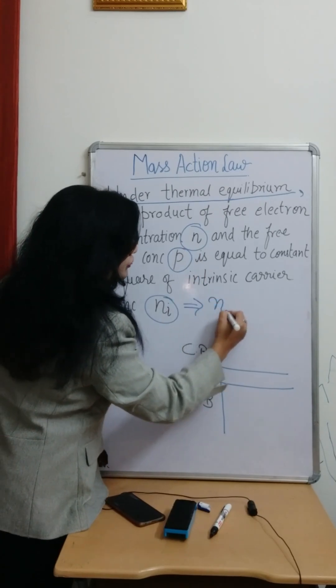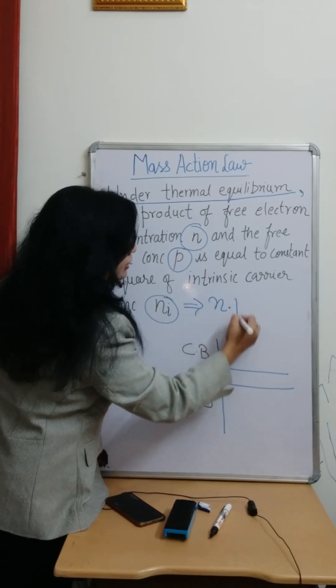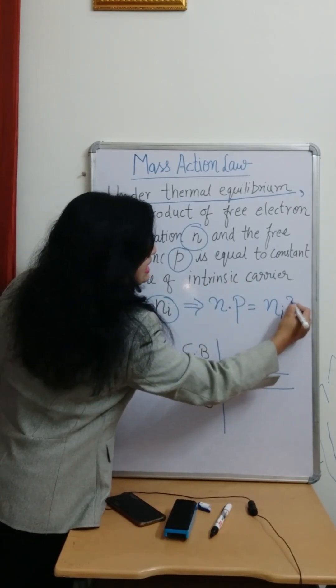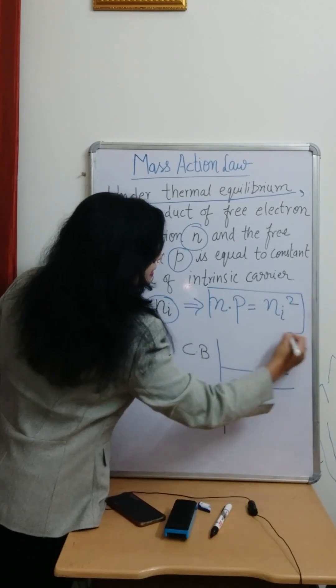If you write it in the form of a formula: the multiplication of free electron concentration and free hole concentration equals intrinsic carrier concentration squared, which means ni squared.